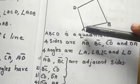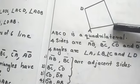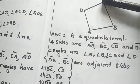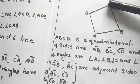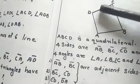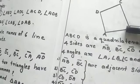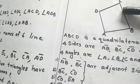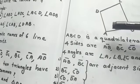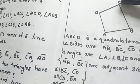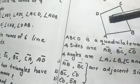Adjacent sides means nearby sides — sides that have a common vertex. AB and BC have the common vertex B, so AB and BC are adjacent sides. Similarly, BC and CD are adjacent sides; CD and DA are adjacent sides; and DA and AB are adjacent sides. For opposite sides: AB and CD are opposite sides, and BC and DA are also opposite sides.